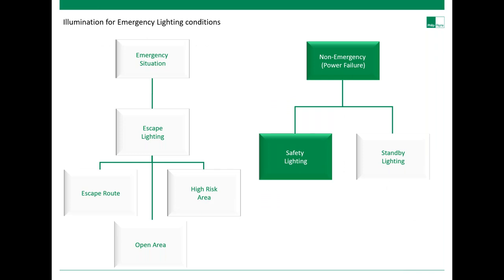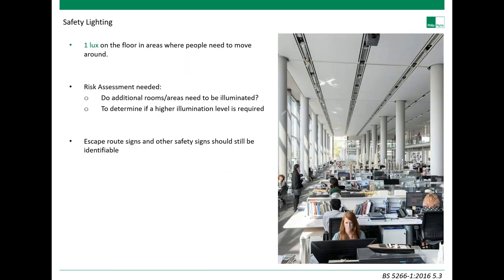Looking at a non-emergency situation where there is still a power failure: safety lighting is lighting that allows occupants to remain in the building where there isn't necessarily an immediate evacuation required — referred to as a stay-put strategy. That illumination needs to be 1 lux on the floor in areas where people need to move around. The safety lighting must be connected to a battery capable of operating for at least one hour to ensure everyone will have time to exit the premises in an emergency. Risk assessments remain essential, and escape route signs and other safety signs should still be identifiable.